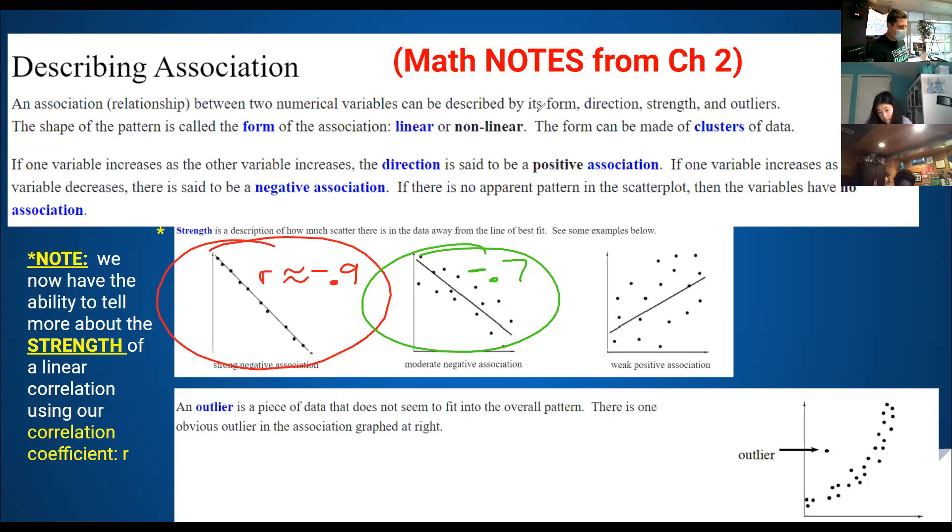Alright. So weak positive association. What does anyone out there think this r value would be for this graph? Yeah, you're correct. It's going to be positive because these points, although scattered, they're flowing upwards. Now weak means it's low on that scale between zero and one. So give me something low on that scale because 0.8, that's pretty close to one. And that would mean your points are very much in a line. 0.6 or lower. Great. So we'll go with 0.6. And then this screen also touches on what it means to be an outlier. An outlier is kind of like that point that doesn't follow the pattern. So there's an example of an outlier right there.